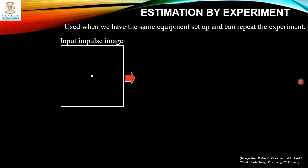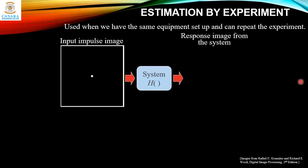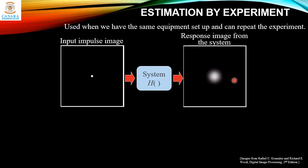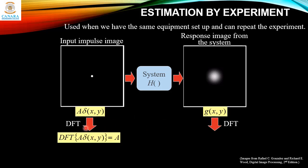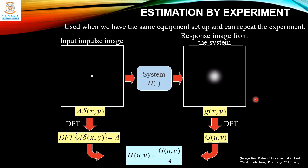We present an input impulse to the system and observe the system response. The impulse is simulated by a bright dot of light — as bright as possible to reduce the effect of noise. In the spatial domain, the impulse is represented as A·δ(x,y) and the degraded output is g(x,y). Since the Fourier transform of an impulse is a constant A, we take the DFT of both sides and estimate the degradation function as H(u,v) = G(u,v) / A.